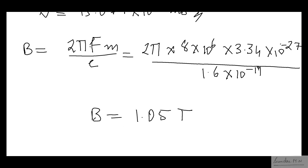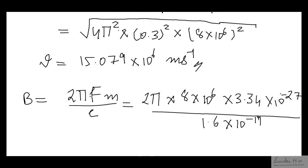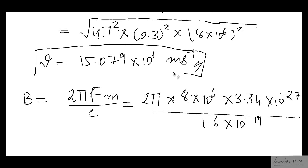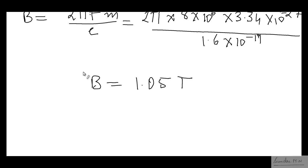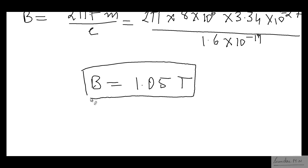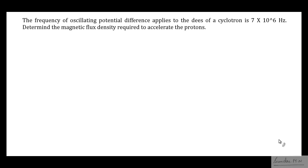So the velocity of the particle emerging out of the D's is approximately 15.079 × 10⁶ meters per second, and the magnetic field strength applied to the cyclotron is approximately 1.05 tesla. The other kind of problem that can come from the accelerators and detectors chapter sounds something like this.